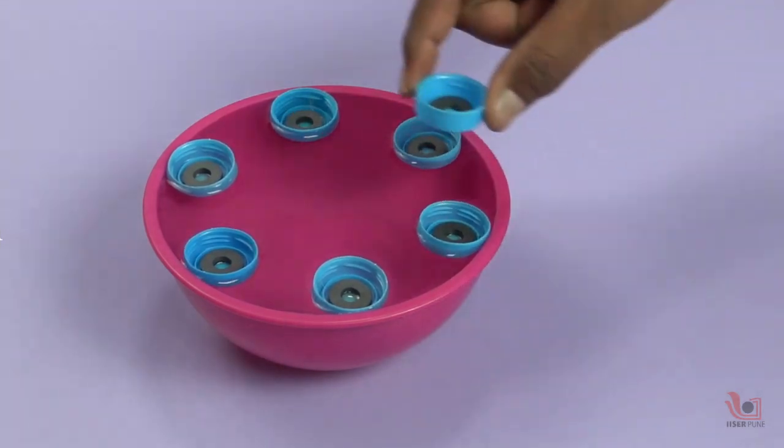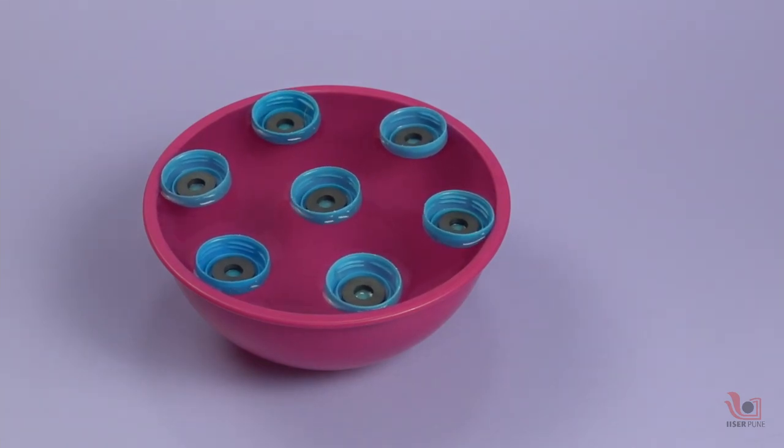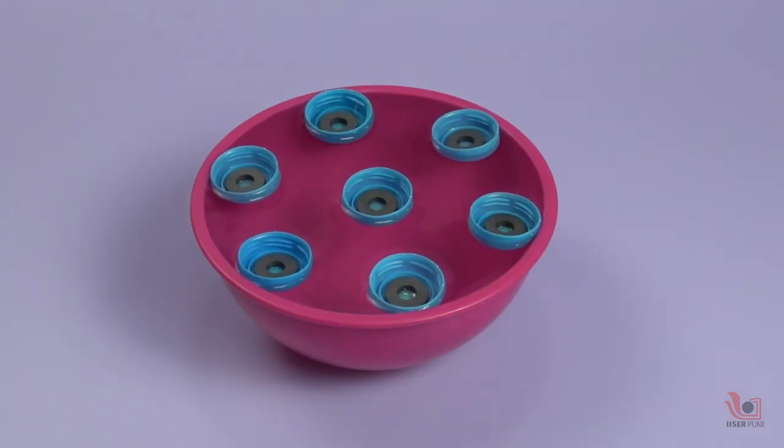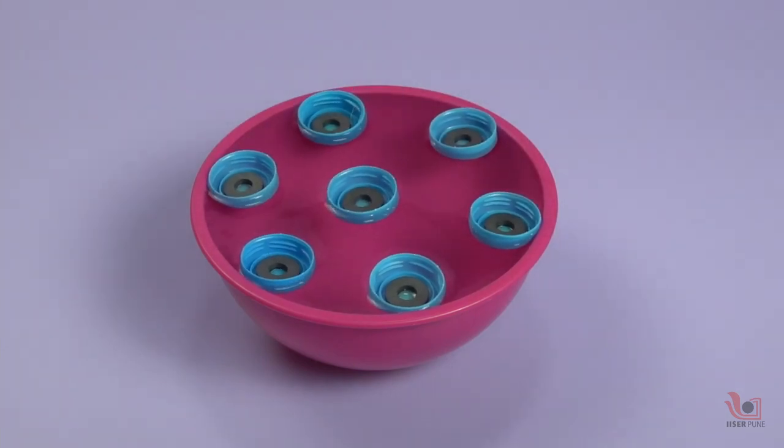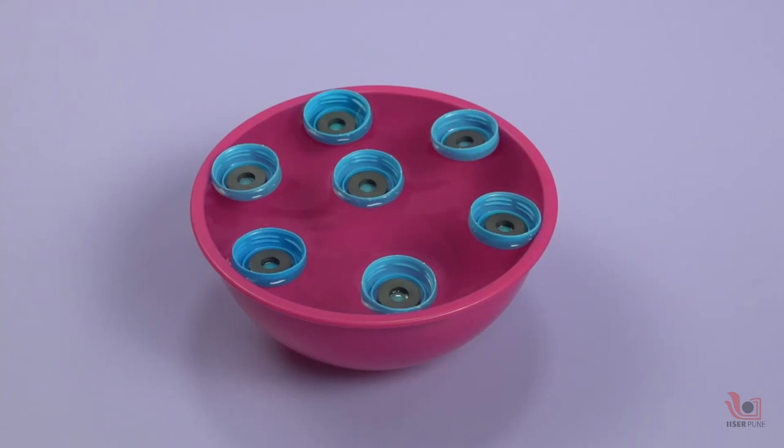If we put the seventh magnet in the water bowl, we can create a hexagon with a center. You can play with it and see the nice repulsion of the magnets in the water bowl.